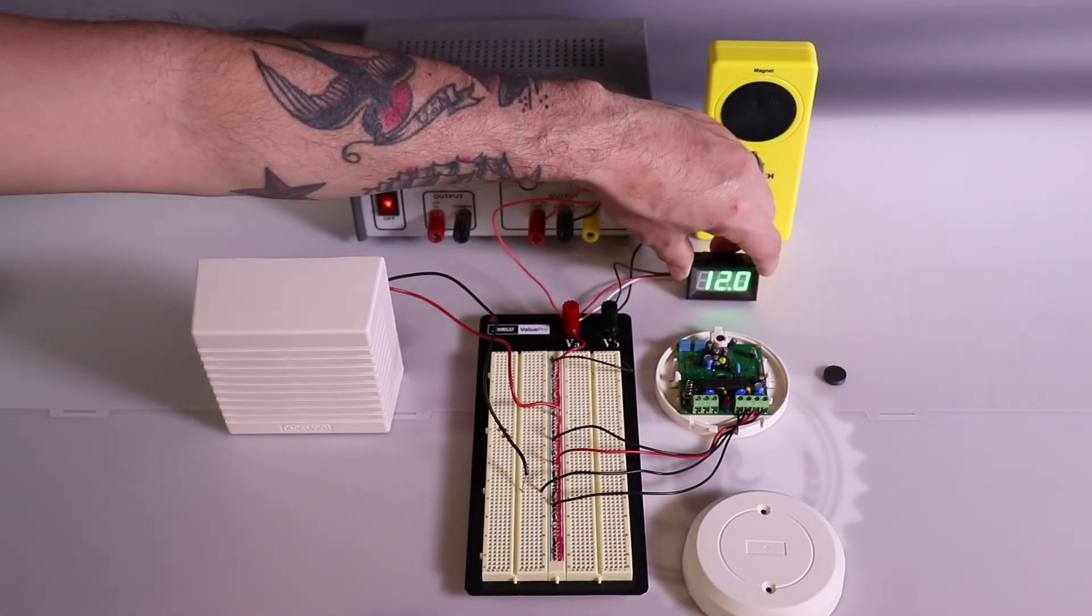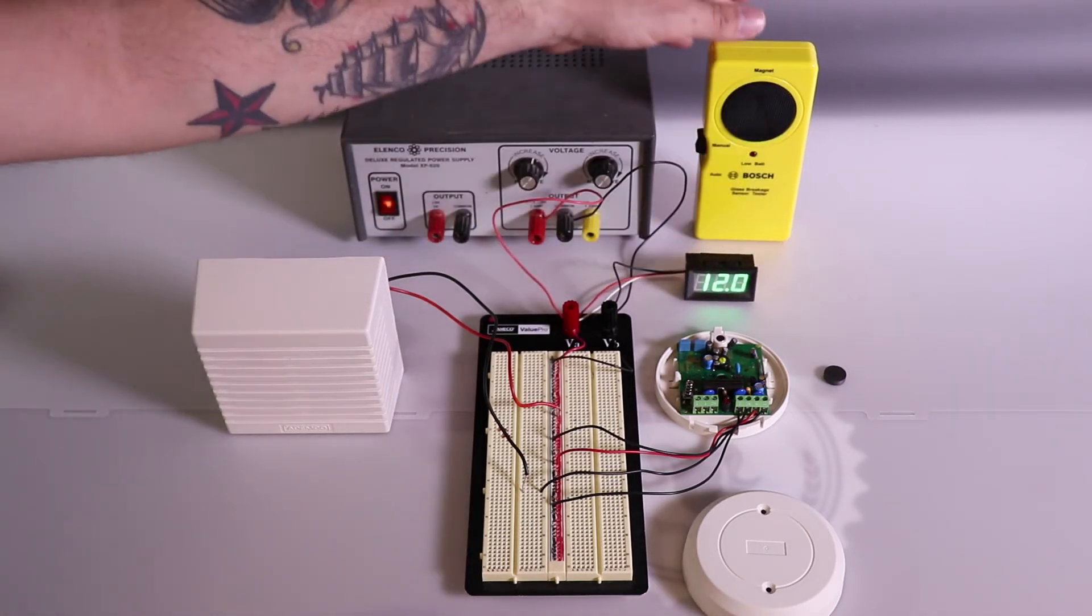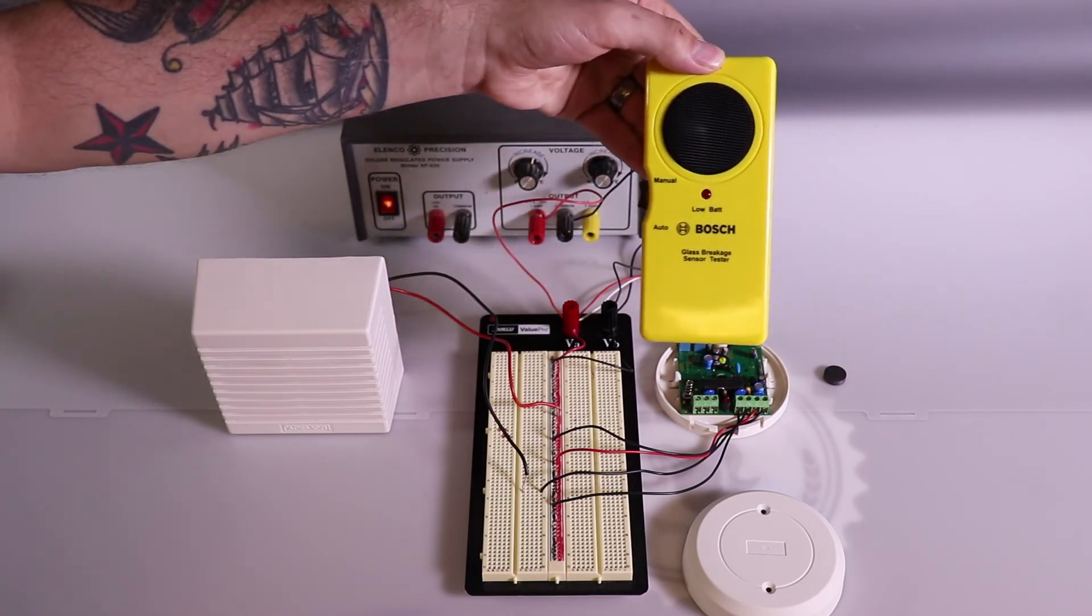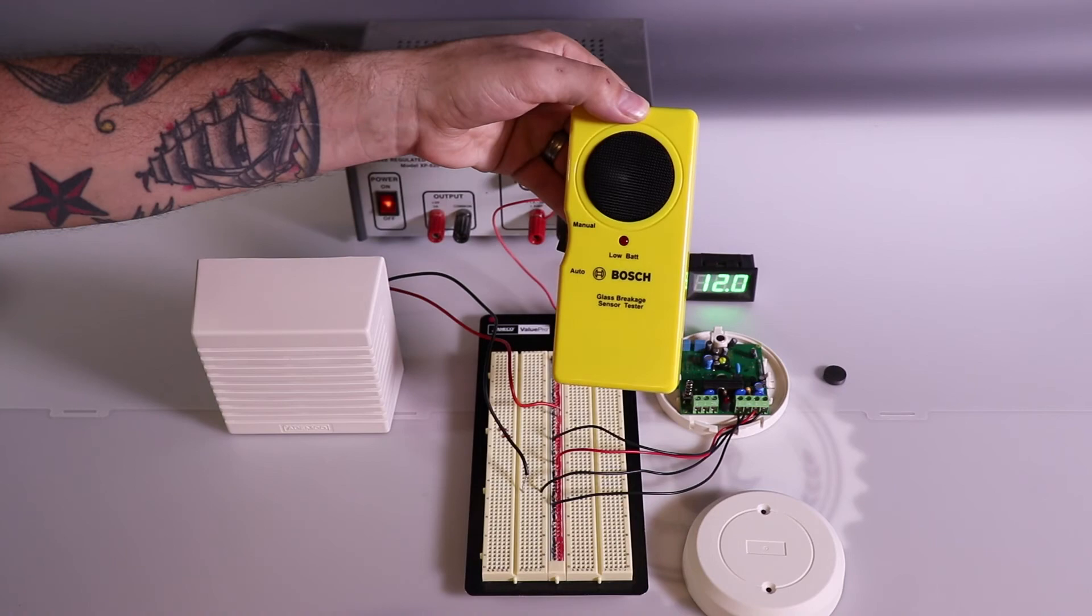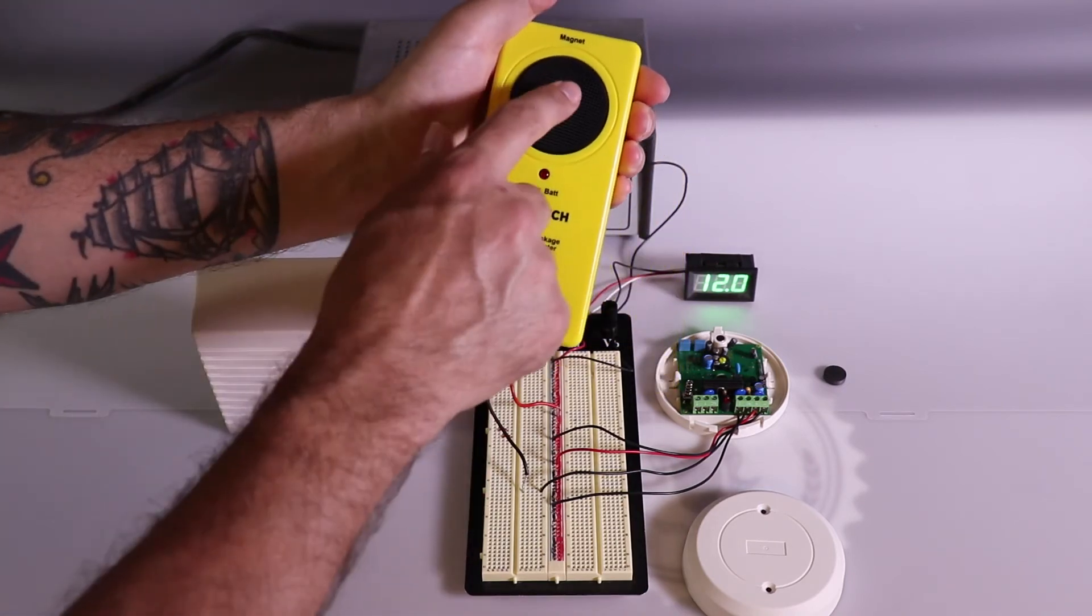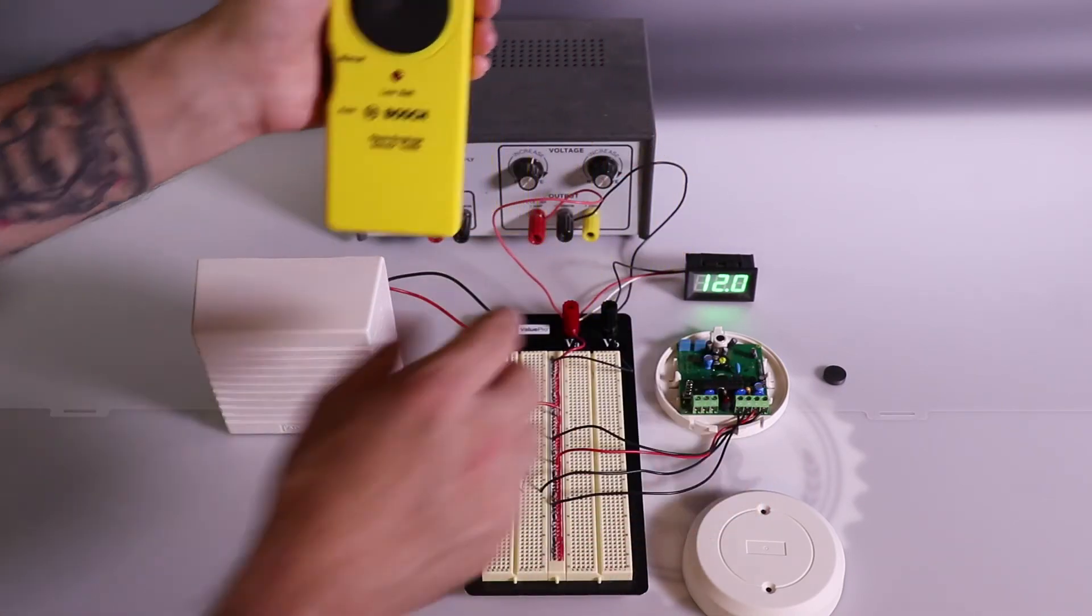Everything requires 12 volts. So you can see I've got 12 volts going to everything right now. And this is a Bosch glass break simulator. And what this does is that it emits the frequency that this is looking for.